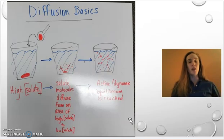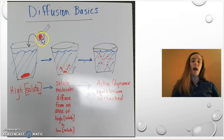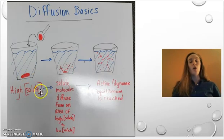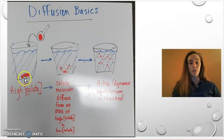To quickly review the basics of diffusion, if you have a solute, a bunch of it in a certain area, over time the solute molecules are going to diffuse from an area of high concentration, right here, to an area of low. You can see those molecules starting to spread out. And then over more time, it's going to continue to do this until active equilibrium is reached.